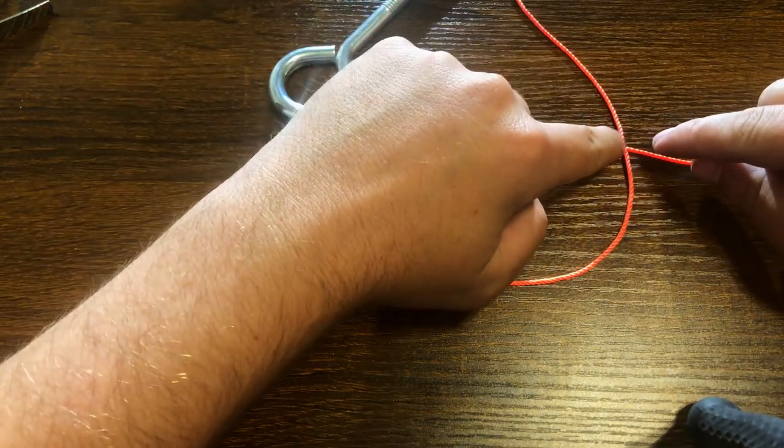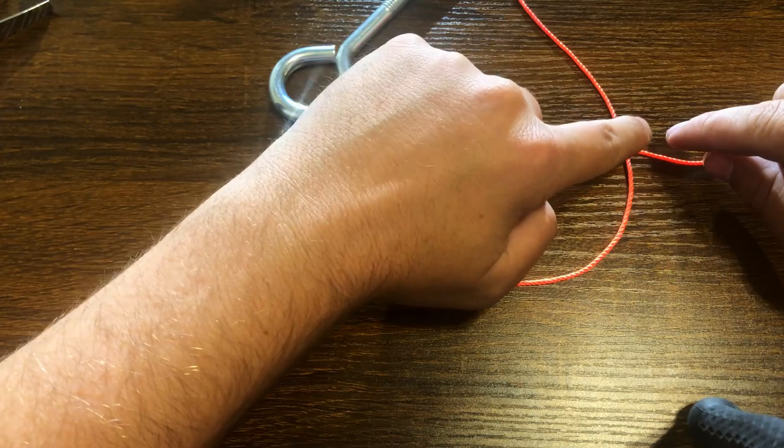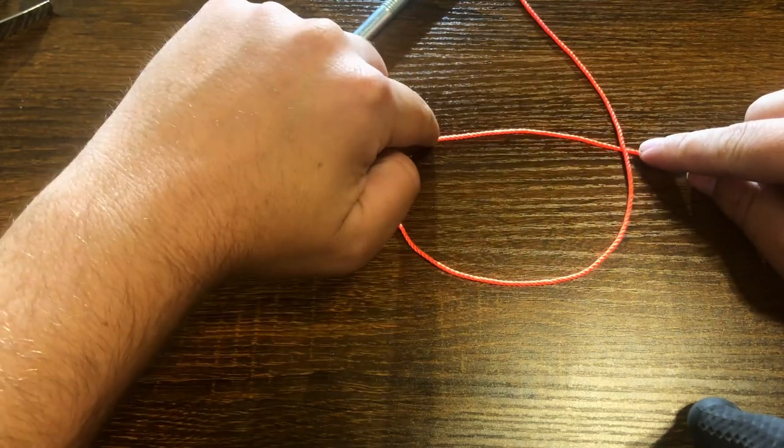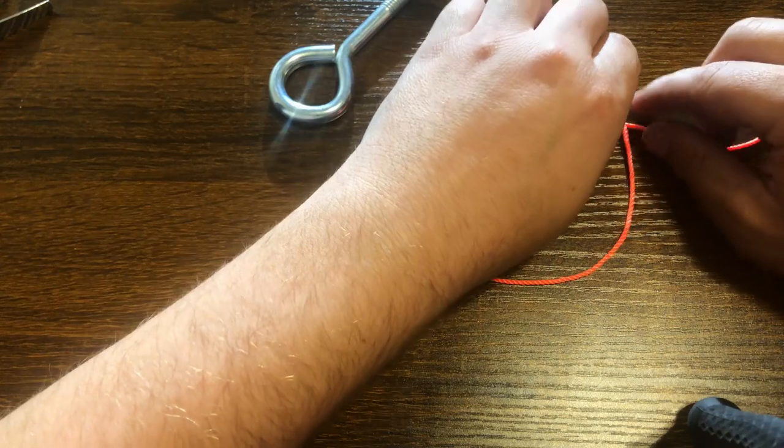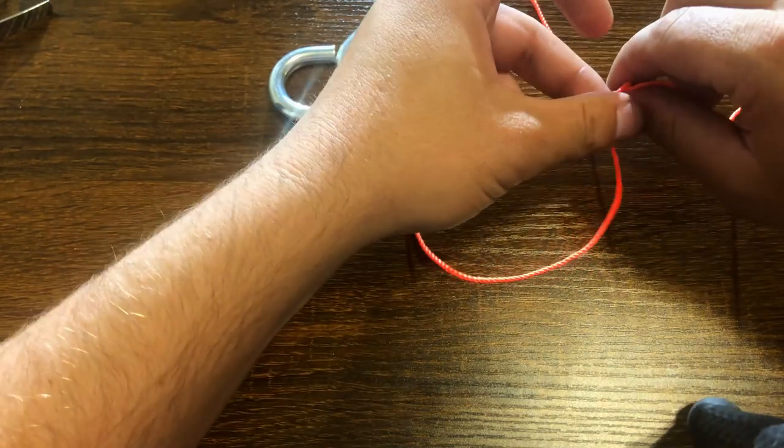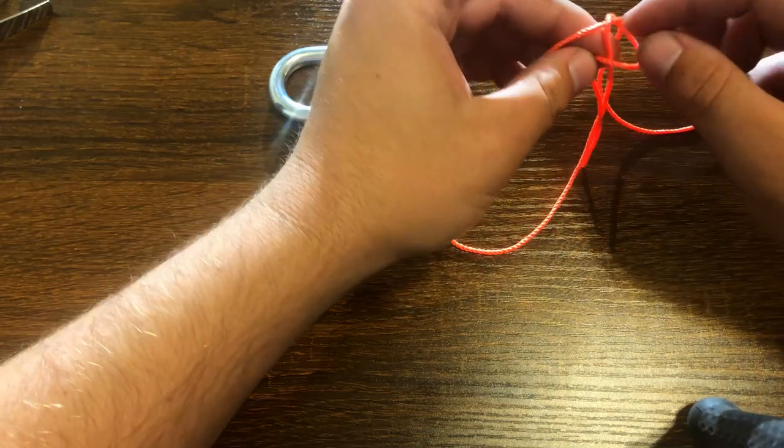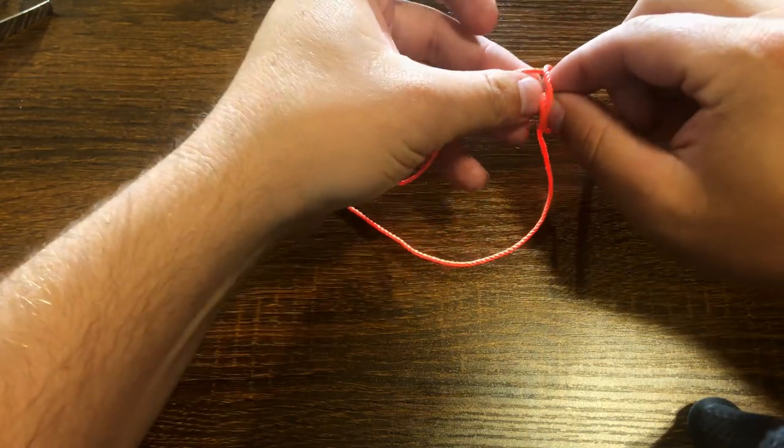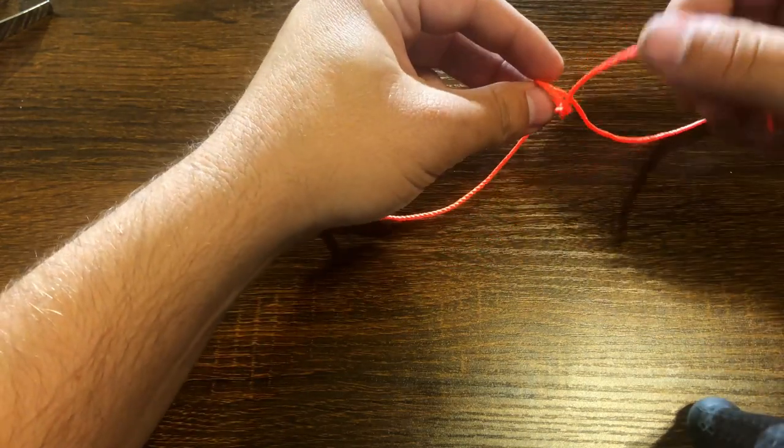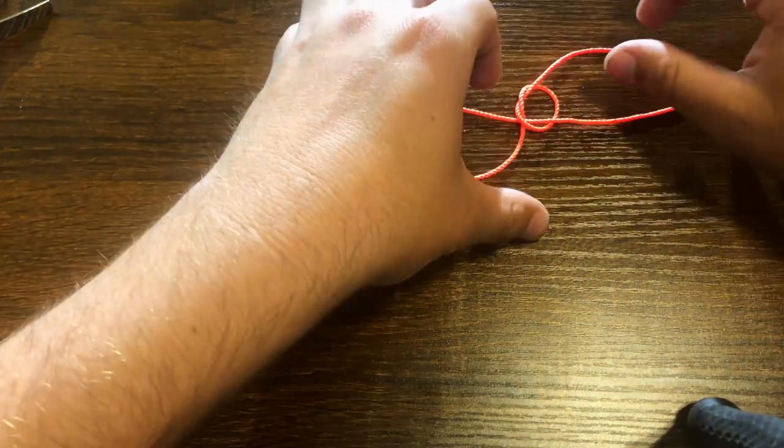And we're gonna need to tie a knot, a square knot, around this line using this line. One that's going to easily slide up and down. So we're just gonna tie a square knot over itself like this. Just like that.